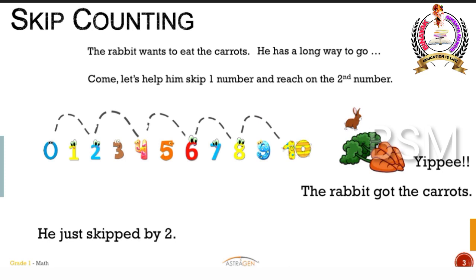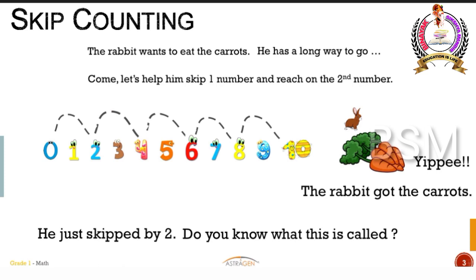He left 3 and reached on 4. What did he leave to reach on 6? He left 5. When he reached on 8, he left 7. And when he reached on 10, he left 9. When he was on 10 and jumped to the carrots, which number did he land on? 12 — and what did he skip in between? 11. Because he skipped by 2. And this skipping is called skip counting — because you leave one number in the middle and continue to count.